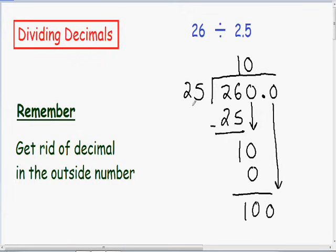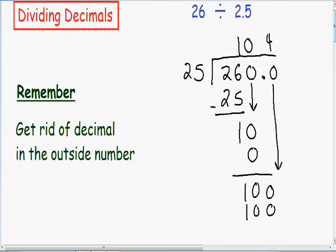25 goes into 100 four times. 4 times 25 is exactly 100. And now we have a remainder of 0. So we can stop. But we still need to place our decimal point. Our decimal point just goes directly up. So it goes in between the 0 and the 4. So now we have a final answer of 10.4.